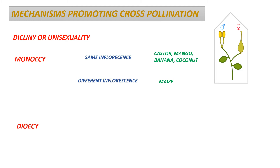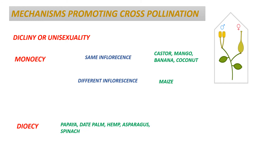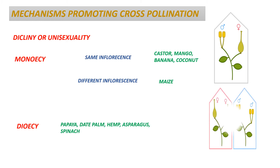Diaceous is a condition where the staminate and pistillate flowers are present in different plants. Plants like papaya, date palm, hemp, asparagus, and spinach have these flowers in different plants. In simpler terms, diaceous is a condition where the flowers have two different homes.